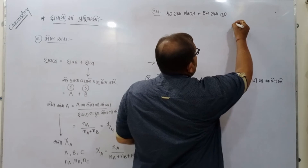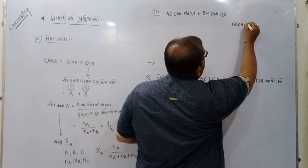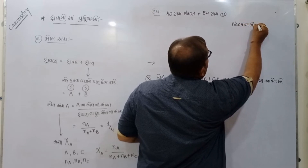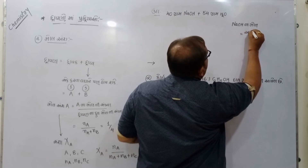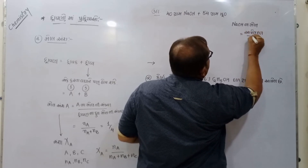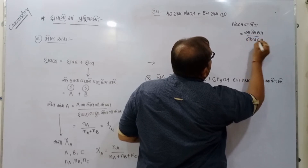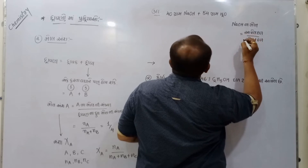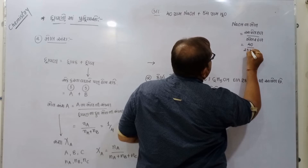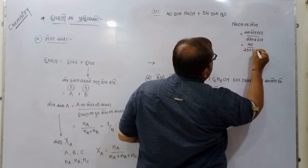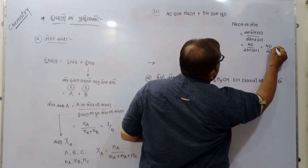NaOH ના મ ો લ — આ પ ે લ દ ળ ÷ મ ો લ ા ર દ ળ = 40 ÷ 40 = 1 મ ો લ.